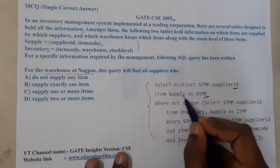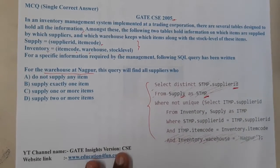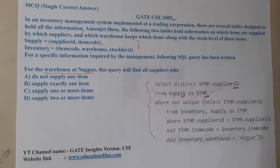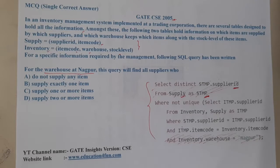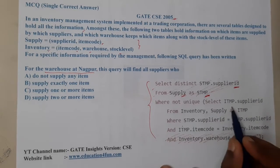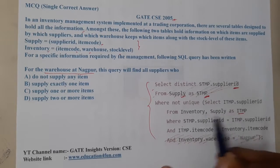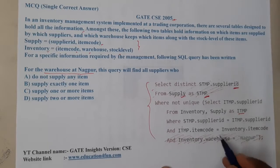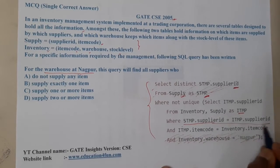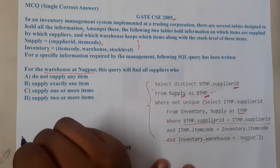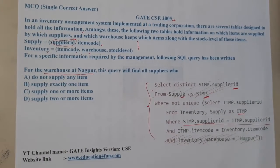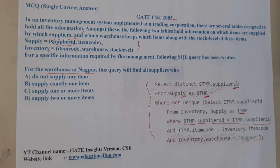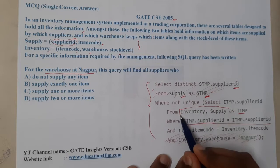The only thing I need to search is: I need to perform this inner query, and based on that inner query, whichever are not unique I am going to print. The inner query uses itmp, which is the combination of the two tables. Basically we are performing a cartesian product or join based on supplier ID, mapping that table with its own table.